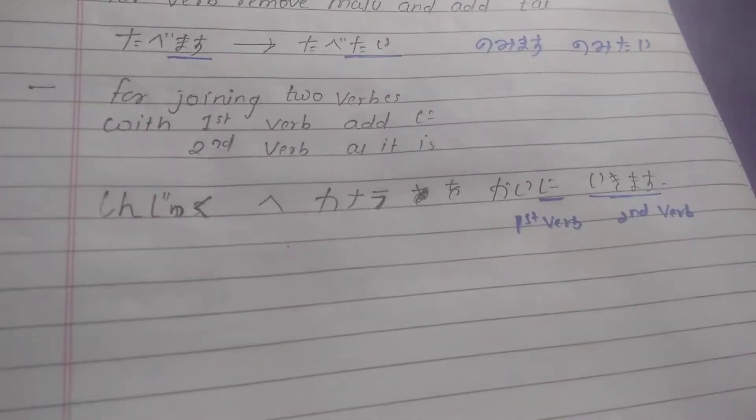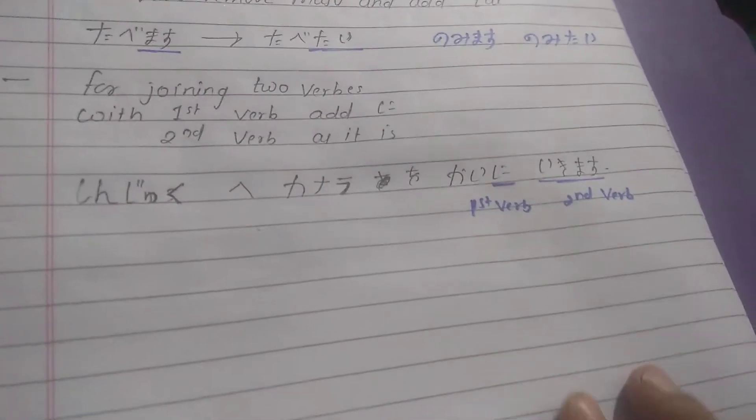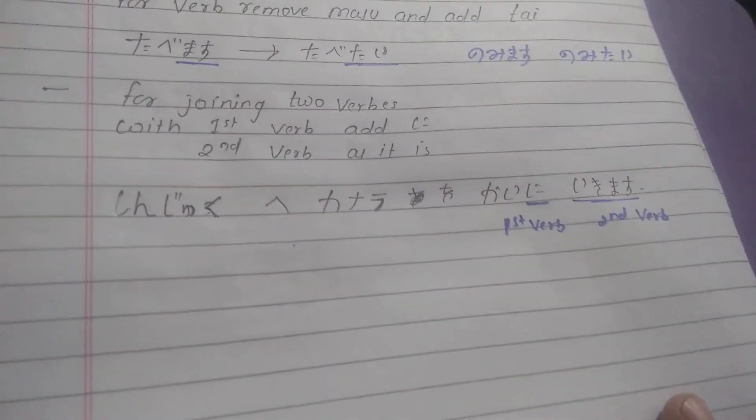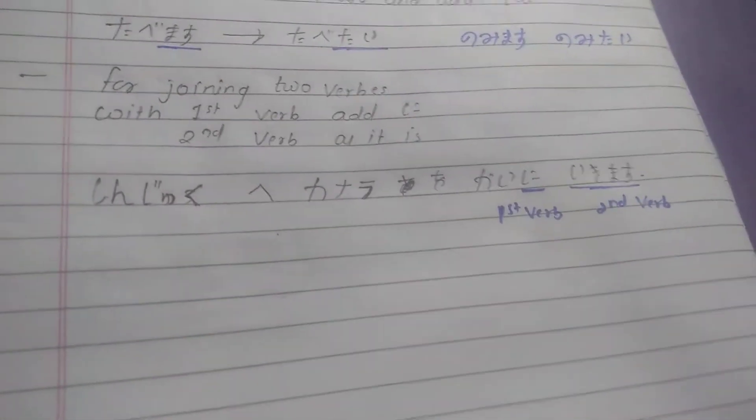For example, Shinjuku e kamera o kai ni ikimasu. There are two verbs back to back: kaimasu is one verb and ikimasu is another. So here, Shinjuku e kamera o...